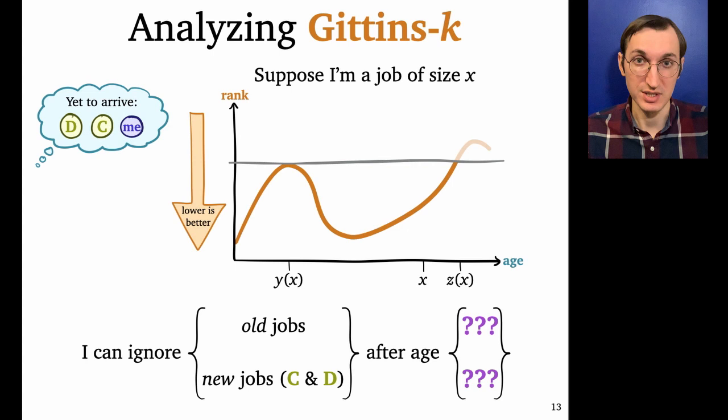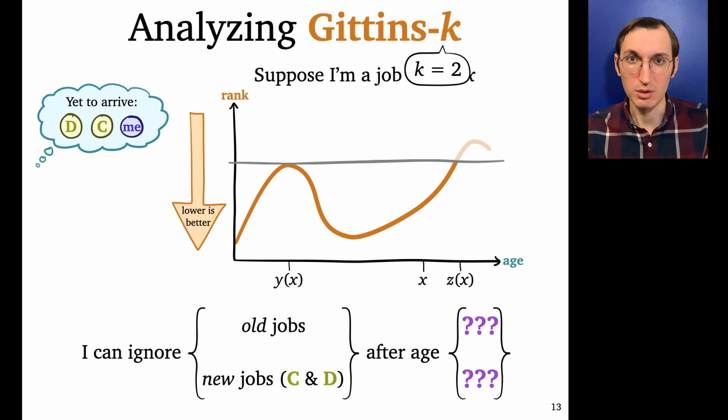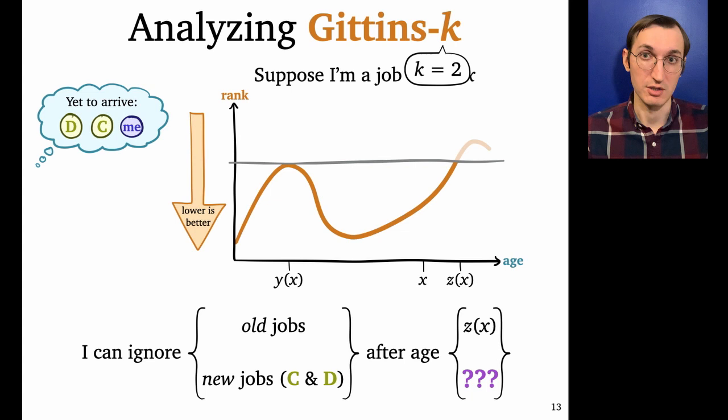So I'm going to go through a very similar example, but now I'm going to ask the same two questions. When can I ignore old jobs? When can I ignore new jobs? But now I've got k equals two servers, which is going to spice things up. So it turns out that for old jobs, the answer is still the same. The answer is still Z of X. So let's talk about new jobs.